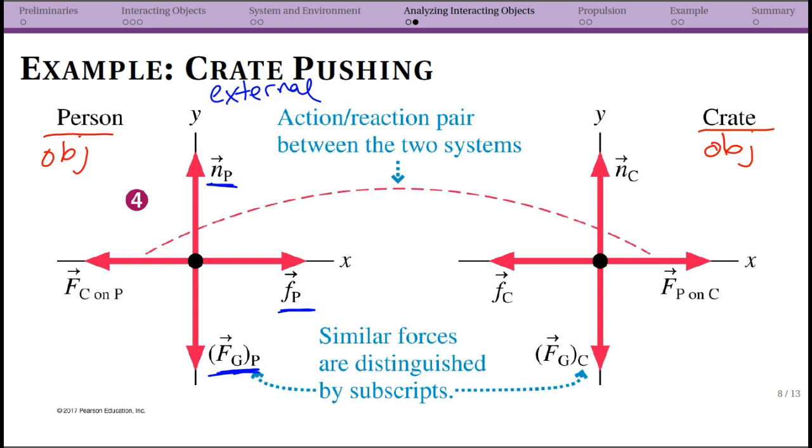On the other hand, we had a line that was connecting our two objects. As the person pushed on the crate, the crate would push back on the person. We see this notation here, C stands for crate, so crate on person. Since this is the force acting on the person, it goes on the person's free body diagram.